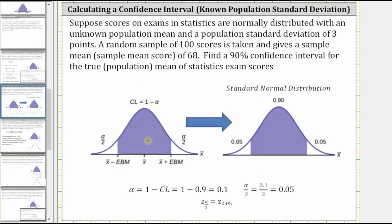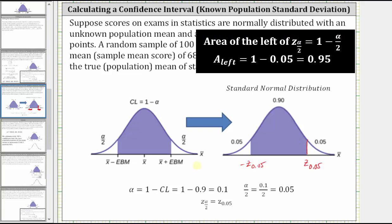Because the confidence level is 90%, the area under the standard normal distribution curve over the same interval must equal 0.90. Because of the symmetry of the bell curve, the remaining area to the left and right must be the same and is given by alpha divided by two. Alpha equals one minus the confidence level, which equals 0.1, so alpha divided by two equals 0.05. This gives the area outside the confidence interval, with z sub 0.05 on the right and negative z sub 0.05 on the left. The area to the left of the z-score is 0.90 plus 0.05, which equals 0.95.